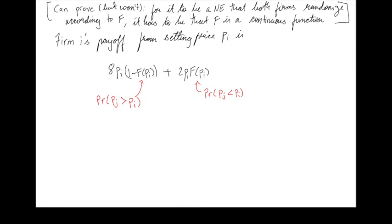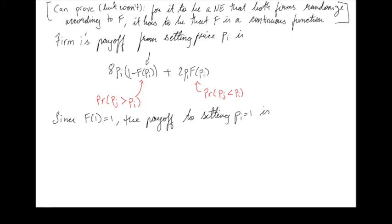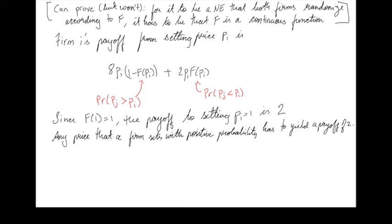What's the payoff from setting pi = 1? We plug in, noting f(1) = 1 since prices are in [0,1] with probability 1. The first term becomes 0 because the probability my opponent sets a price higher than 1 is 0, so I never get 8 units of demand. With probability 1, I get a payoff of 2 times pi = 2. In a mixed strategy, any pure strategy played with positive probability must yield the same payoff, which is 2. However, at very low prices, even serving 8 units gives negligible payoff, so firms won't set those prices.